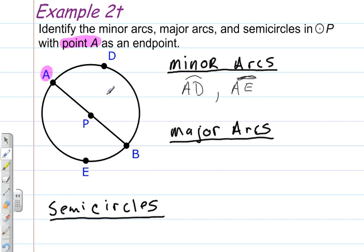Now, major arcs with A as an endpoint. There's different ways to name them. You can name the one going to the right from A. You could call it A-D-E, or you could call it A-B-E. I'm going to call it A-B-E, so that'd be arc A-B-E.